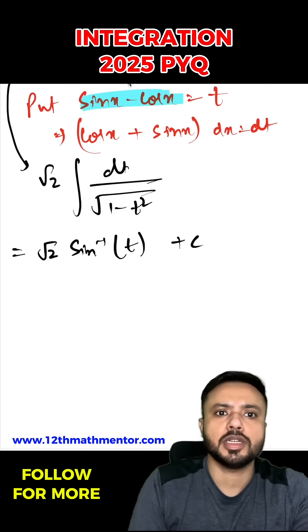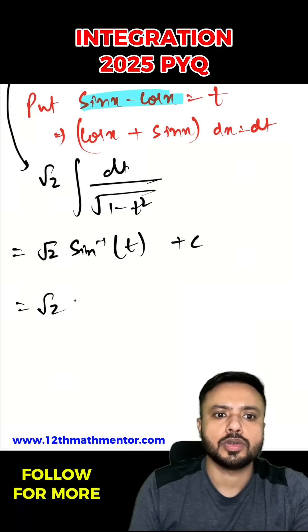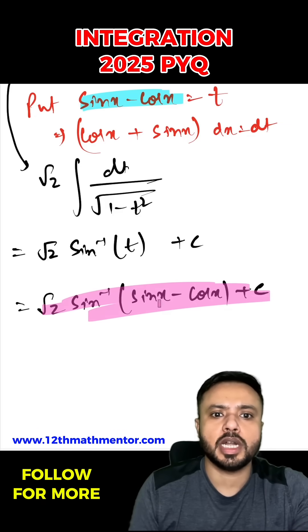And we had substituted the value of t as sine x minus cos x, so I'll just put it back over here. So root 2 sine inverse sine x minus cos x plus c. This is the desired answer for the asked integral.